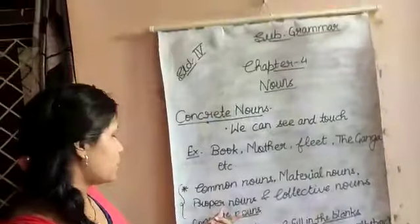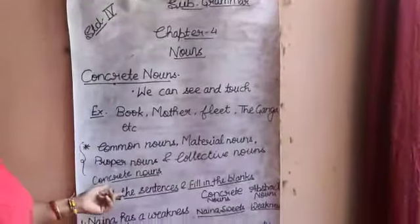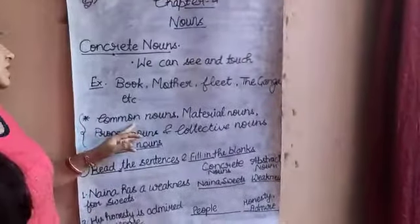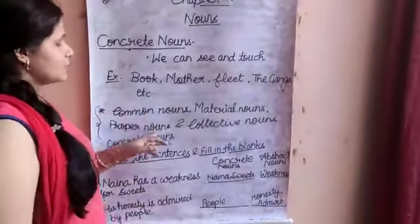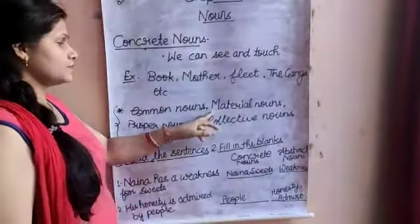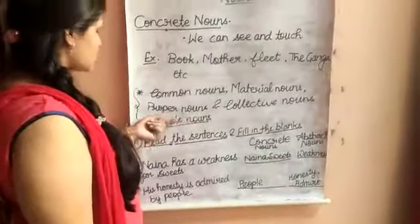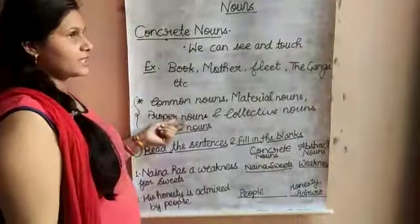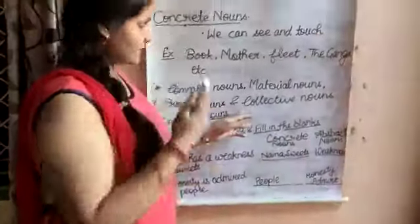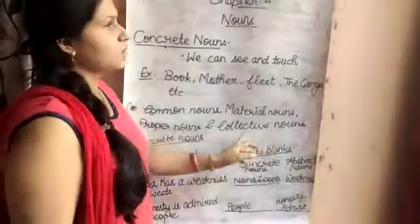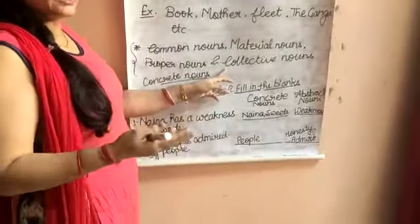Common Nouns, Material Nouns, Proper Nouns, and Collective Nouns — these four types of Nouns are Concrete Nouns. In Common Nouns, we can see. The Material Nouns, we can see and touch. The Proper Nouns, we can call them by a particular name. The Collective Nouns, we have groups — you can call them a group.